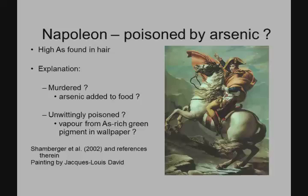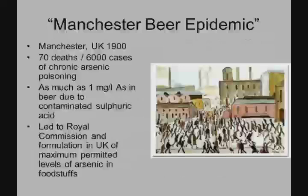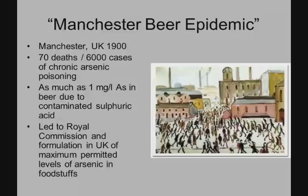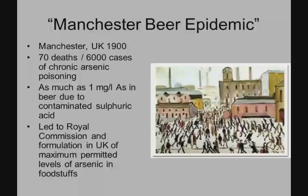There have also been stories closer to home. In Manchester in 1900, 70 people died from chronic arsenic poisoning, and 6,000 people were affected — and this was because of beer. There was one milligram per liter of arsenic found in the beer, which is enormously high. The current World Health Organization guideline for arsenic is 10 micrograms per liter. This had a bad effect but led to something good — the Royal Commission came along and tried to set some guidelines about arsenic.